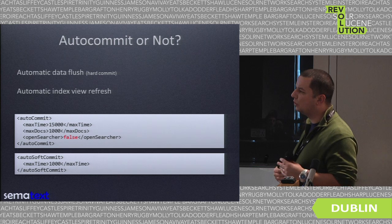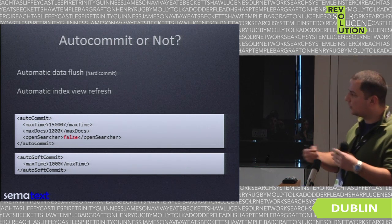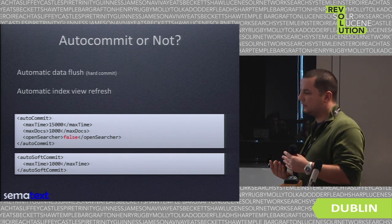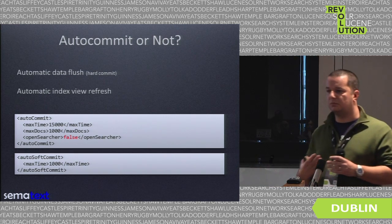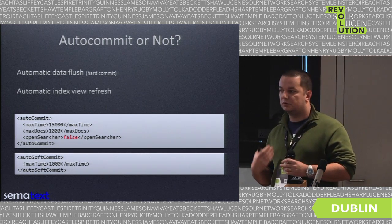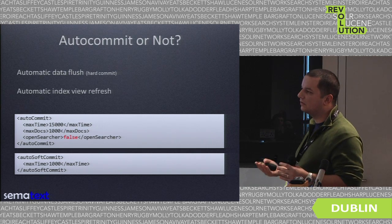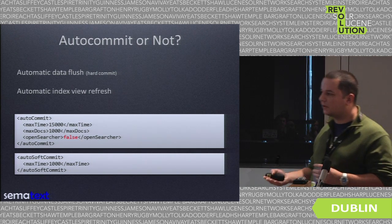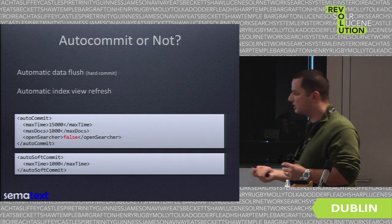We have the soft autocommit which is only there to refresh the view. For example, in this configuration we allow autocommit to hold data for 15 seconds — so every 15 seconds documents will be flushed to disk. However, with the soft autocommit we specify one second, which means every second a new searcher will be opened and the documents will be visible for searching. Because if you don't open the new searcher, the documents that were indexed won't be visible to your application.